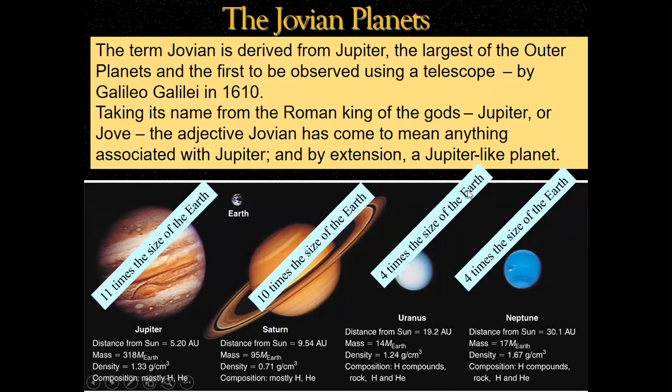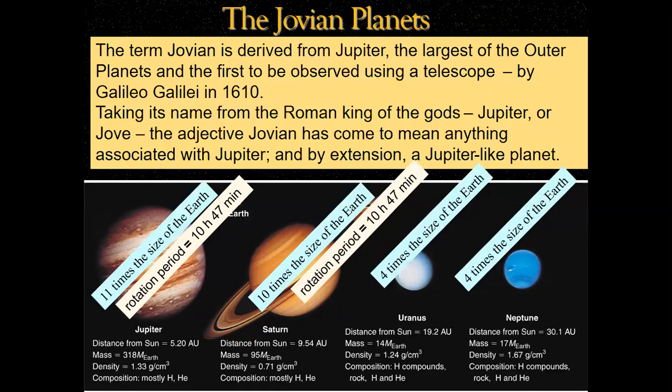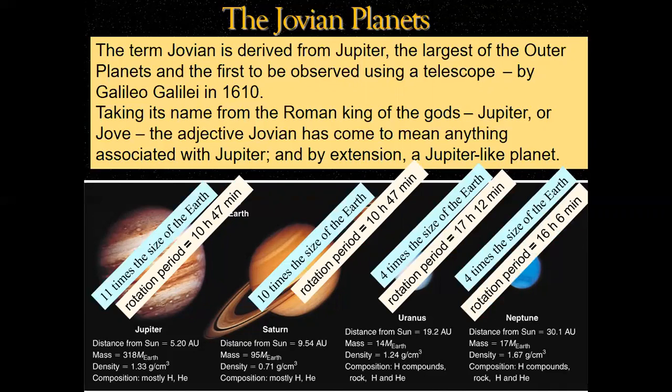Four times the size of Earth for both Uranus and Neptune. That means you can fit four Earths along the diameter. Then rotational periods. We know Jupiter and Saturn spend about the same time for rotational period. Uranus spends about 17 hours and 12 minutes. Neptune spends 16 hours, six minutes. There's no big variation here except one hour or so.